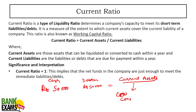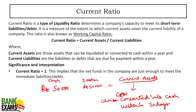You can convert current assets into cash within 30 days. Examples of current assets: cash is a current asset, your bank account balance is a current asset. The money that your customers owe you — your debtors — that is also a current asset. Inventory in your store, warehouse, or shop is also a current asset.